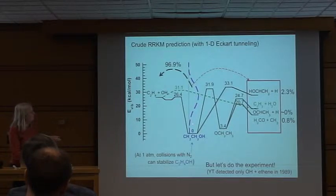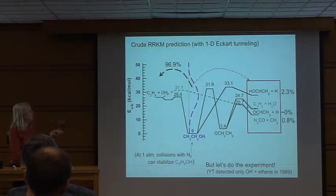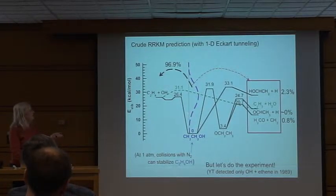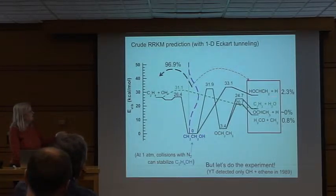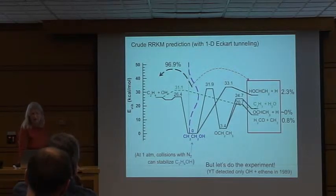We're starting from here, so we see what would have been the second half of the inelastic collision — the reactive events. Specifically, the reactive events from the addition channel, because we don't start with OH plus ethene heading toward the bimolecular reaction; we start here. So one does not expect to see the abstraction reaction — that's OH colliding with C2H4 abstracting one of the hydrogens — one expects to see one of these addition channels.